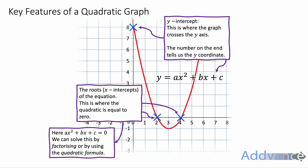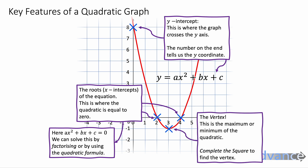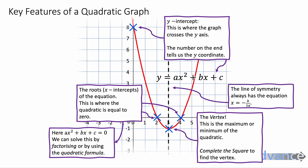We find the roots of a quadratic either by factorising and solving, or by using the quadratic formula to find when the quadratic is equal to zero. The vertex of a quadratic — where it's a minimum or a maximum — is found by completing the square. And the line of symmetry is given by the equation x equals minus b over 2a.